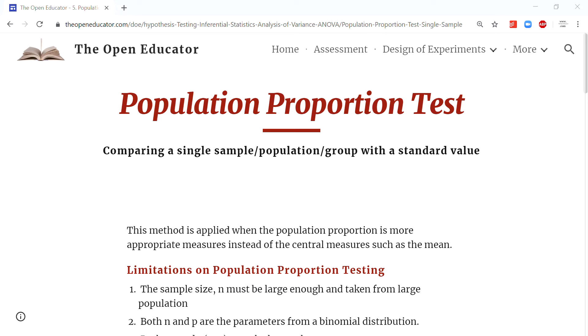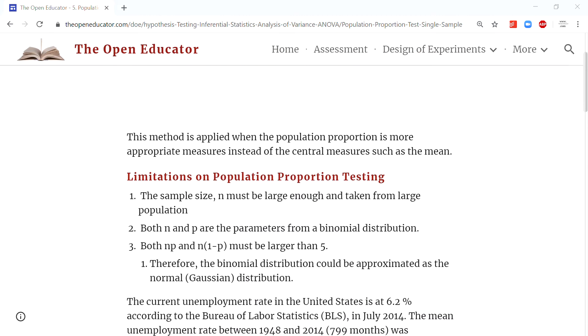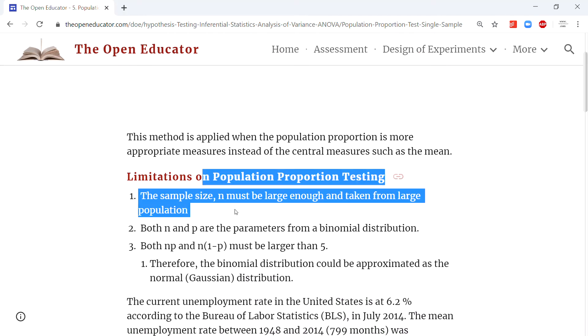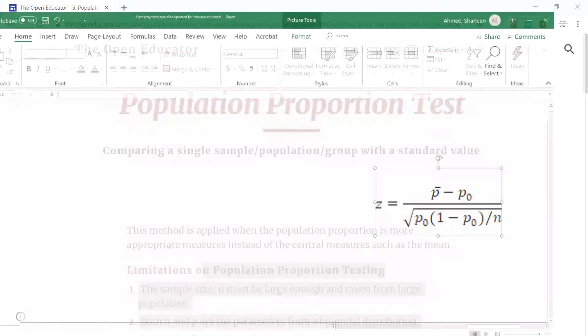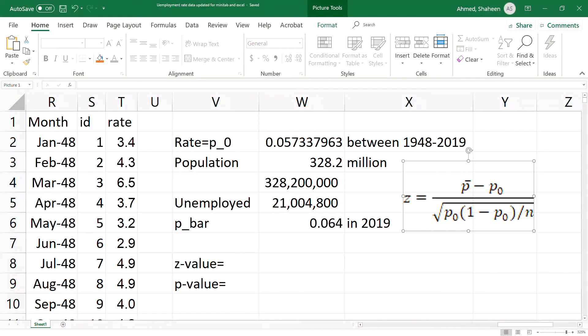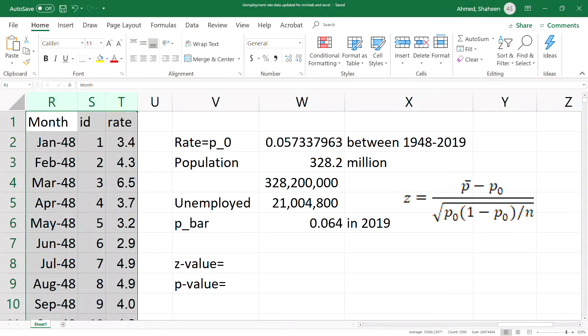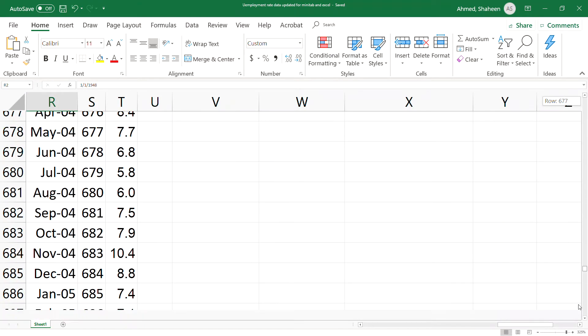There are a few limitations on that you can read at theopeneducator.com. Let me show you an example where we can apply this proportion test. Here I have the data for the unemployment rate in the United States from January 1948 all the way to 2019.